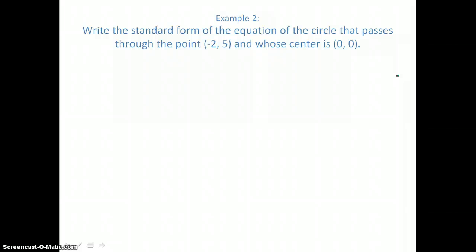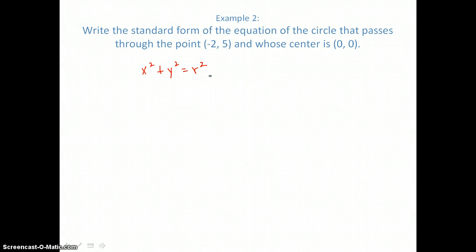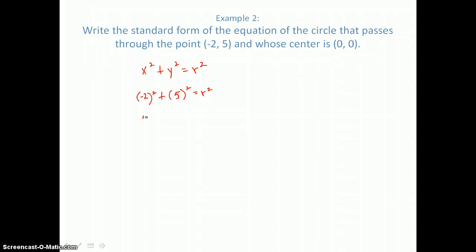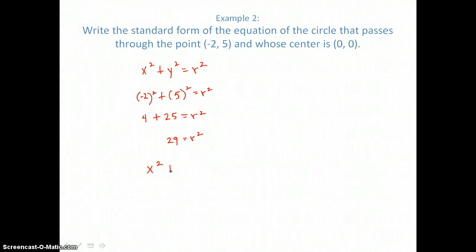In example 2, we want to write the standard form of the equation of the circle that passes through the point negative 2, 5, and whose center is 0, 0. Since the center is 0, 0, the equation is simply x squared plus y squared equals r squared. I substitute negative 2 in for x and 5 in for y and solve for r squared. Negative 2 squared is 4, and 5 squared is 25, so r squared equals 29. The equation of our circle in standard form is x squared plus y squared equals 29.